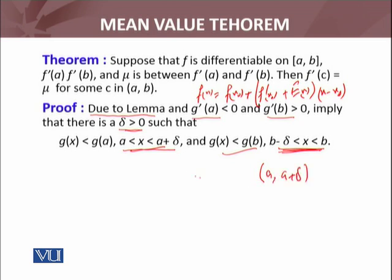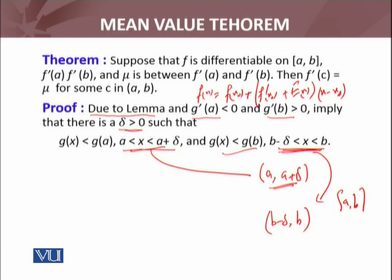The neighborhoods are (a, a + δ) and (b - δ, b) for the closed interval [a, b].